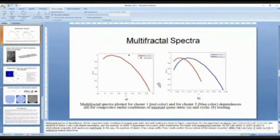For the experiment of cyclic loading in the unidirectional composite, both spectra are multifractal. In this case, the spectrum of cluster two has a larger width. These results confirm the correctness of the decision to perform differential processing of clustering data in multifractal analysis.